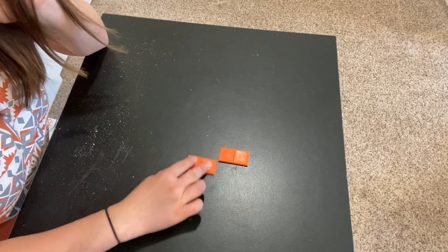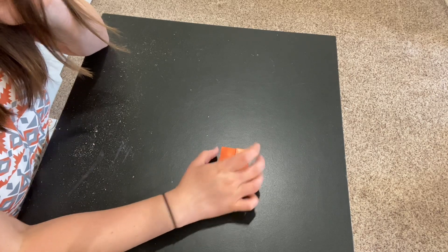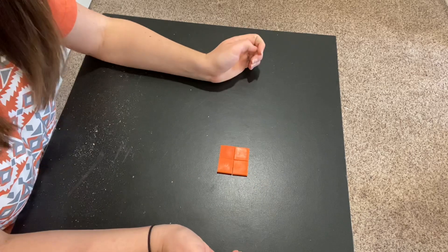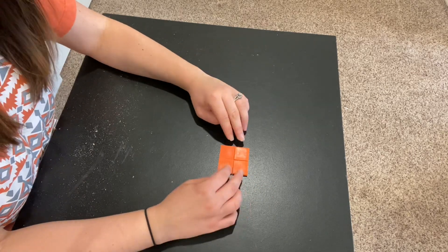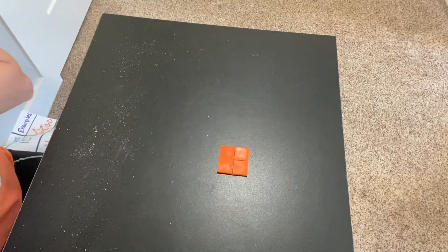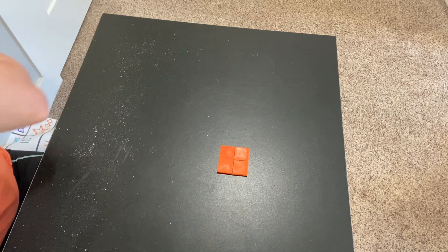I could rearrange them like this, and now what do I have? Now I just have a larger square. It's still made out of four smaller squares, though. So we're taking shapes and creating new shapes out of them.